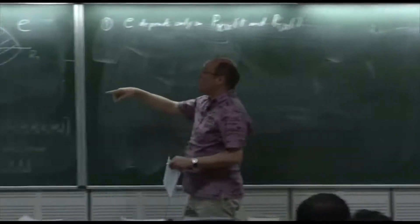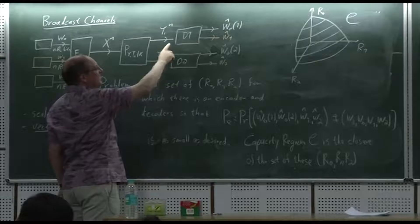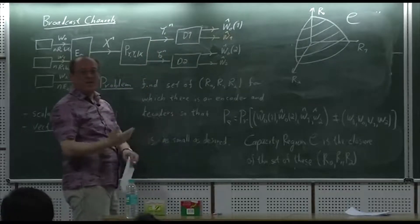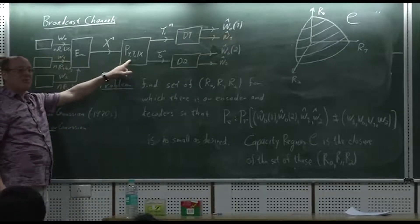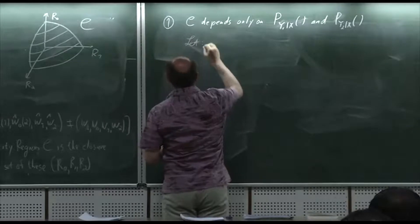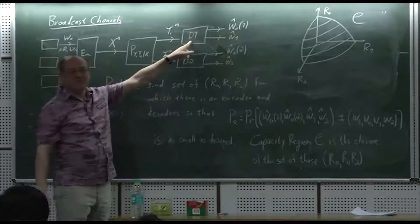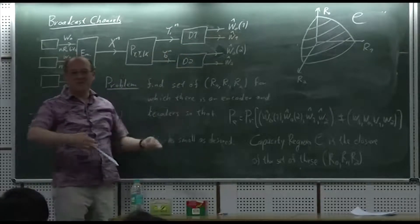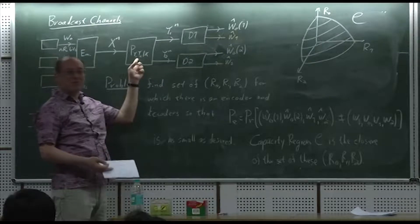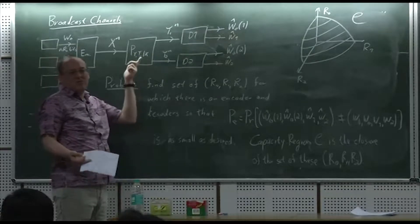Why? Because decoder 1 sees only Y1^n and decoder 2 sees only Y2^n — the decoders never use joint statistics. The transmitter could, but the receivers can't. An ML decoder for receiver 1 depends only on P(Y1|X). Changing joint statistics while keeping marginals fixed leaves the ML decoder and error probability unchanged. So all channels with the same marginals have the same capacity region.